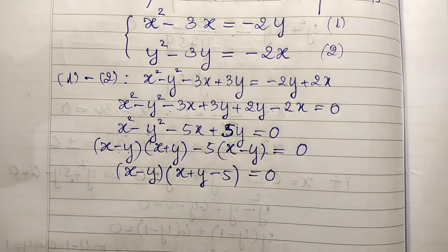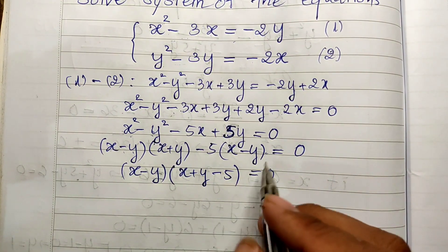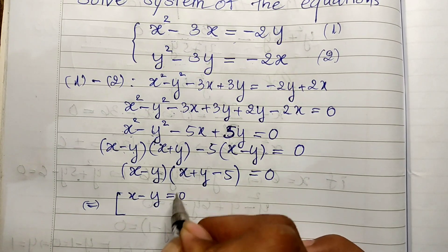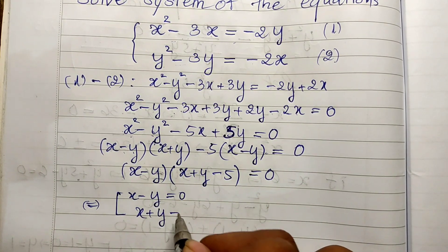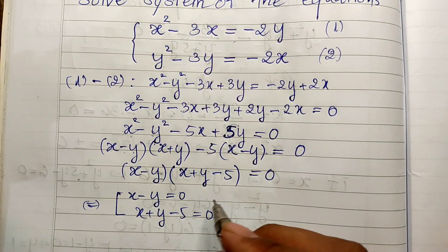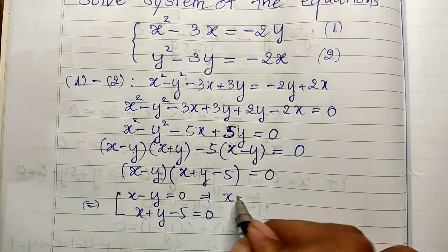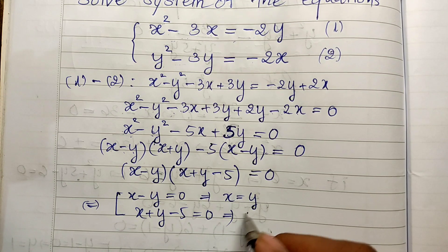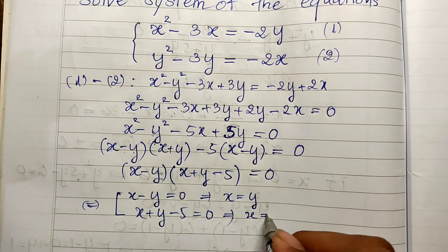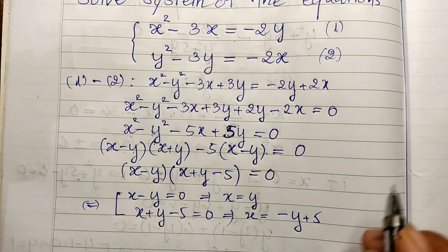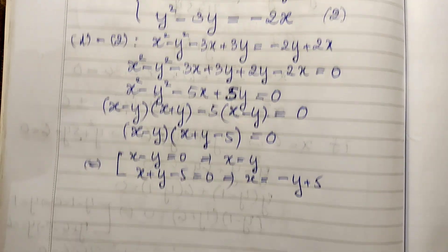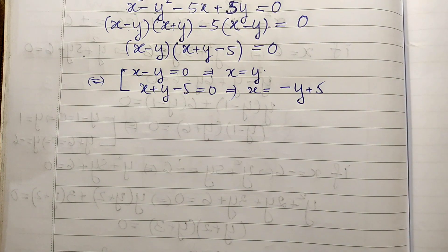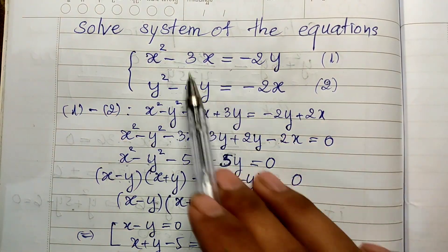We now have two factors equal to zero. So either x minus y equals 0, which gives us x equals y, or x plus y minus 5 equals 0. We'll use each case by substituting back into the original equations.